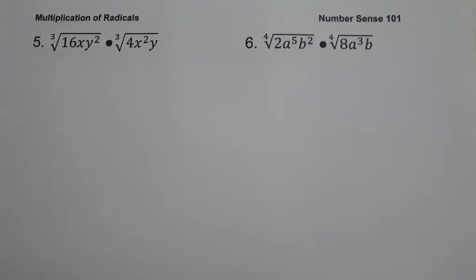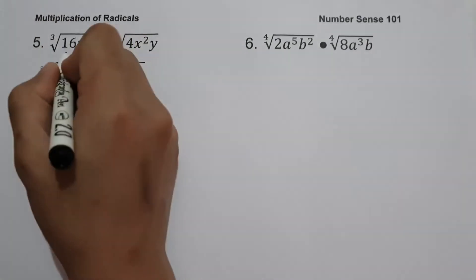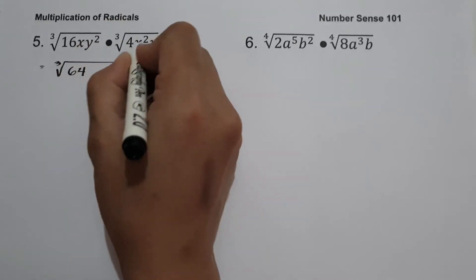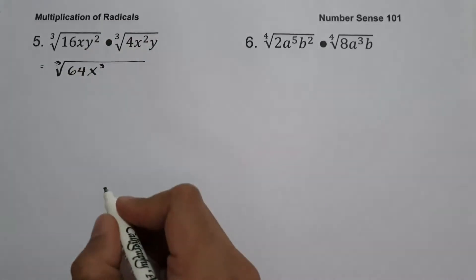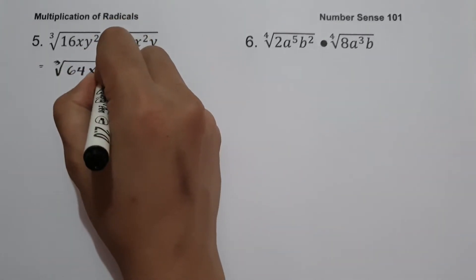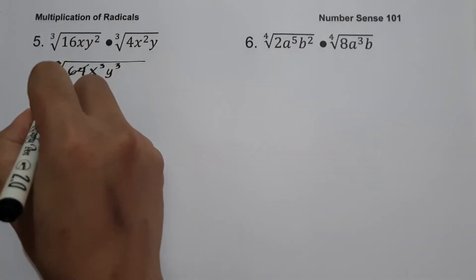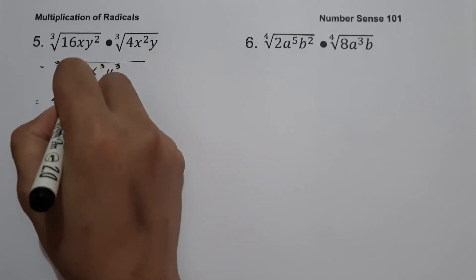On example number five we have cube root of 16xy squared multiplied by cube root of 4x squared y. Since we have the same index of 3, we multiply 16 times 4 to get 64, then x times x squared gives x cubed, and y squared times y gives y cubed. So cube root of 64 is 4, cube root of x cubed is x, and cube root of y cubed is y.